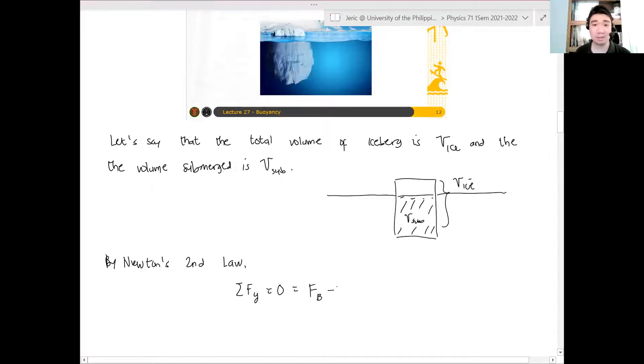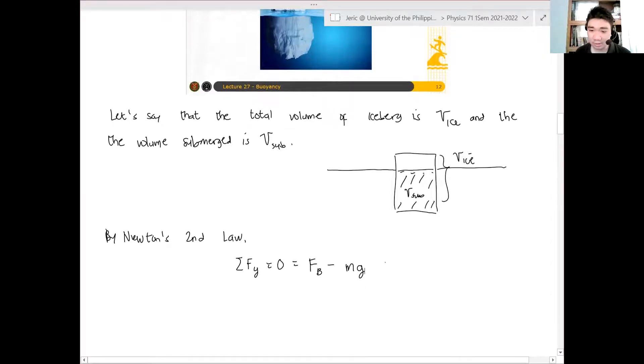This is Fb minus a weight pointing downward, minus mg. Let's say m is the total mass of the iceberg. Now, remember, so I'll just write it as mass ice times g.